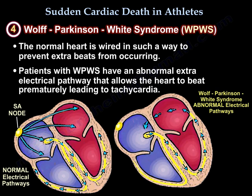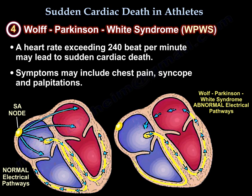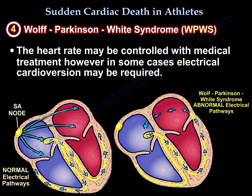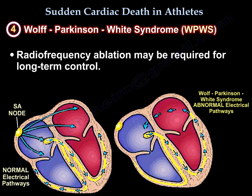Wolf-Parkinson-White syndrome: the normal heart is wired in such a way to prevent extra beats from occurring. Patients with Wolf-Parkinson-White syndrome have an abnormal extra electrical pathway that allows the heart to beat prematurely, leading to tachycardia. A heart rate exceeding 240 beats per minute may lead to sudden cardiac death. Symptoms may include chest pain, syncope, and palpitations. Continuous ambulatory EKG monitoring such as with a Holter monitor can help in diagnosis. The heart rate may be controlled with medical treatment; however, in some cases electrical cardioversion may be required. Radiofrequency ablation may be required for long-term control.